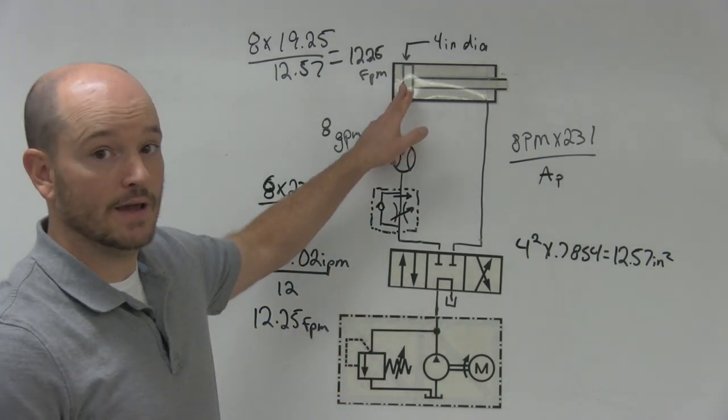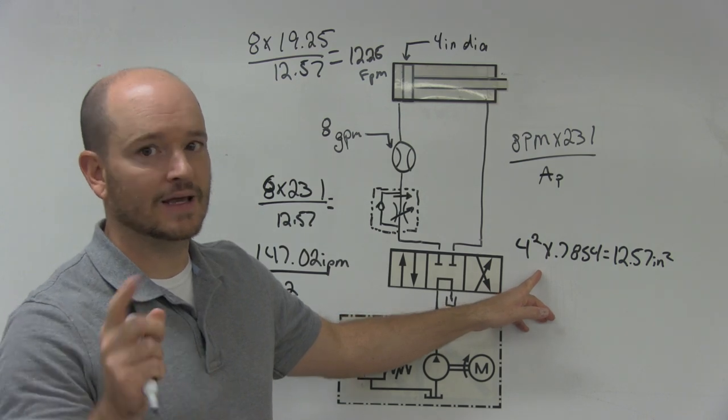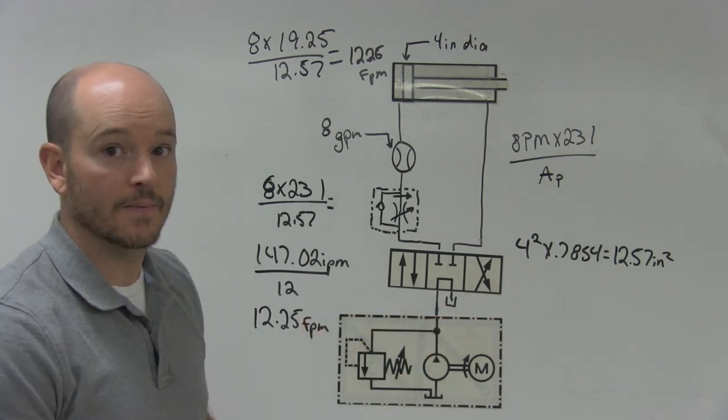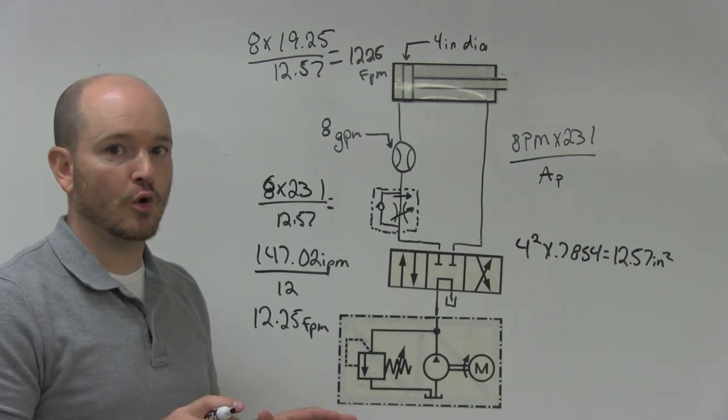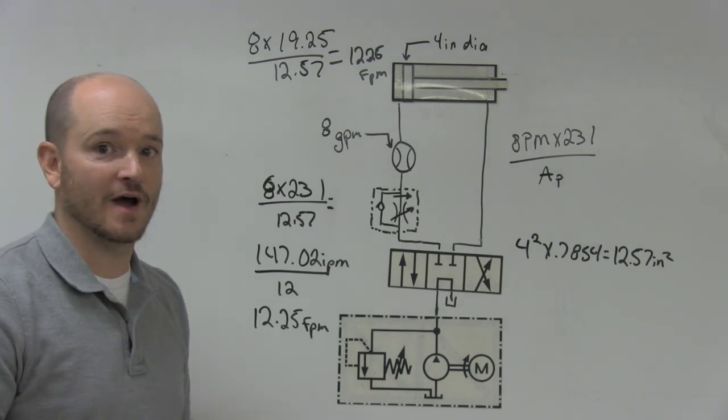Now, it's really nice if they give you the area. But if not, you're going to want to run them through this formula. And again, I have another video on that if you want to learn how to convert diameter over to area. But I hope this is just a real quick introduction into cylinder speed, and I hope this helps. Thanks a lot for watching, and please subscribe.